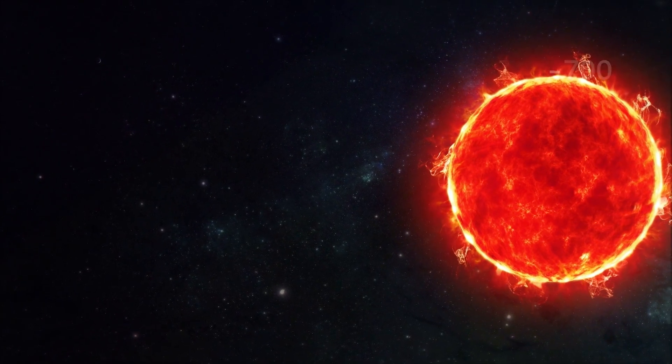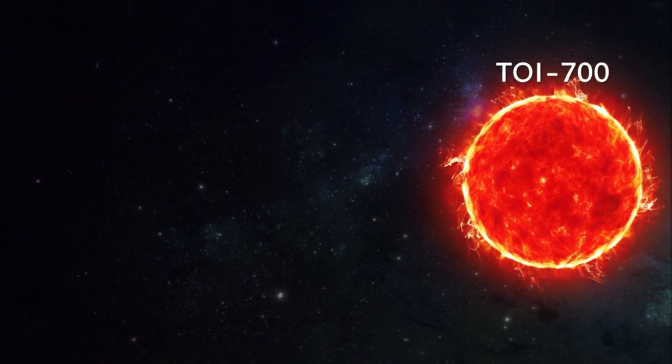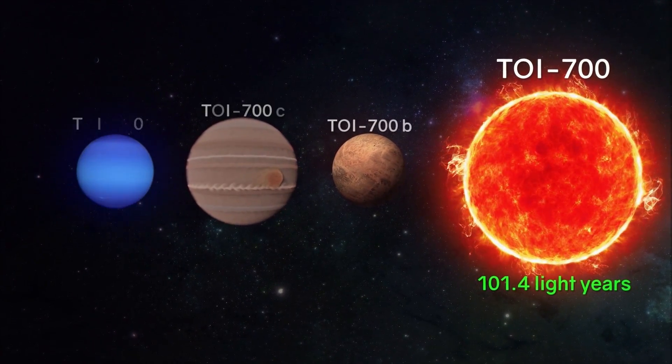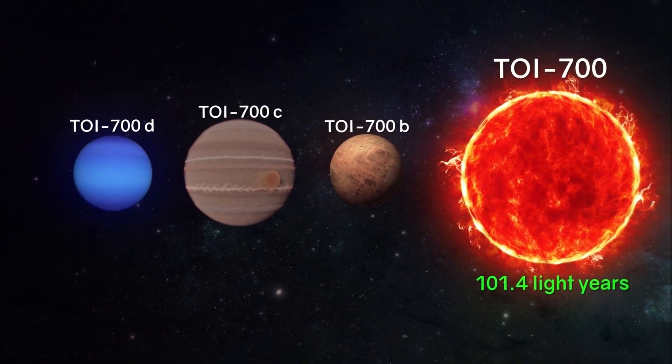And the most interesting discovery at the moment was announced on January 7, 2020, by the press service of the NASA Goddard Space Flight Center. The red dwarf star TOI 700, in the constellation Dorado, 101.4 light-years away from us, has three exoplanets discovered.